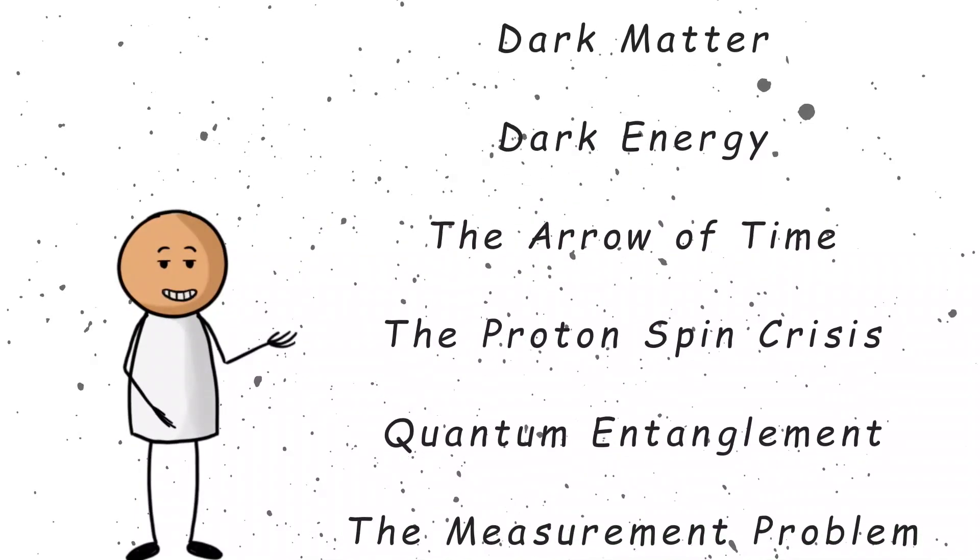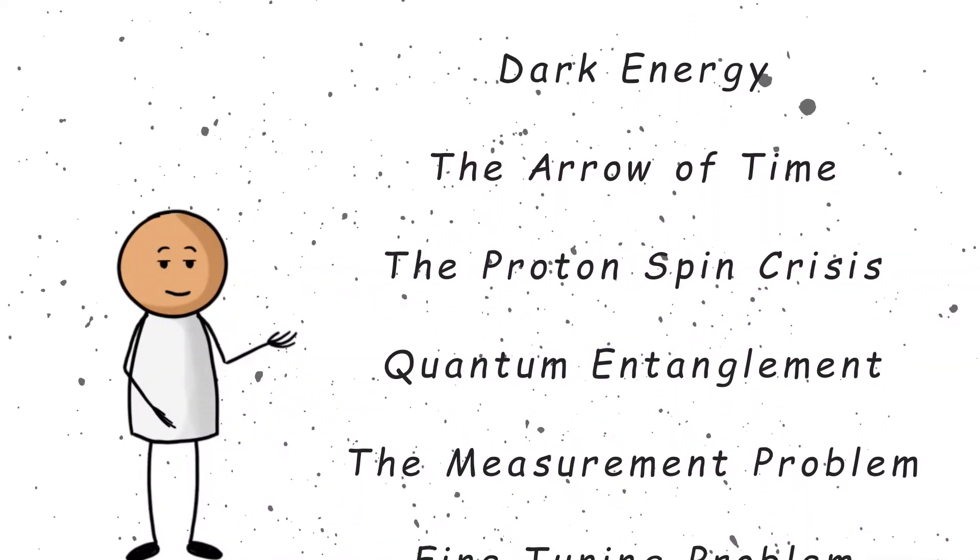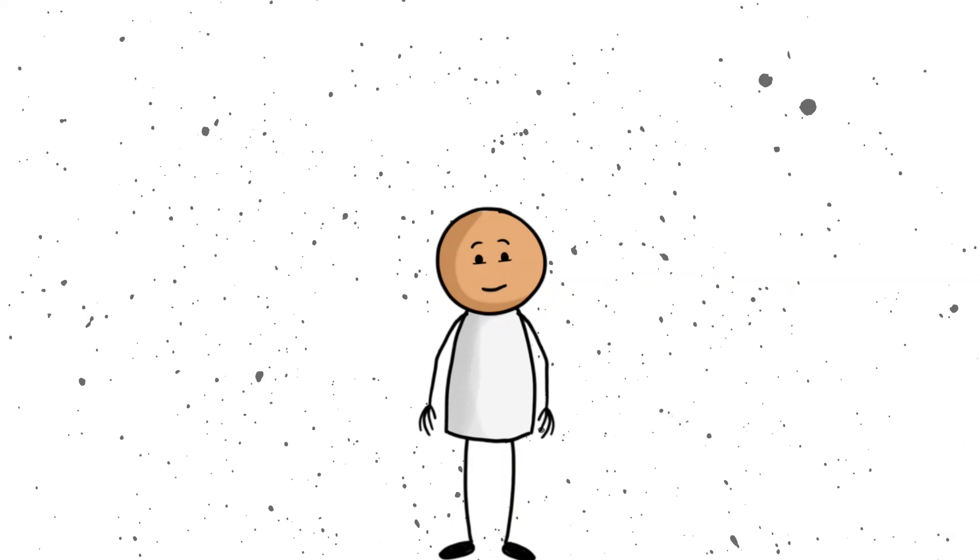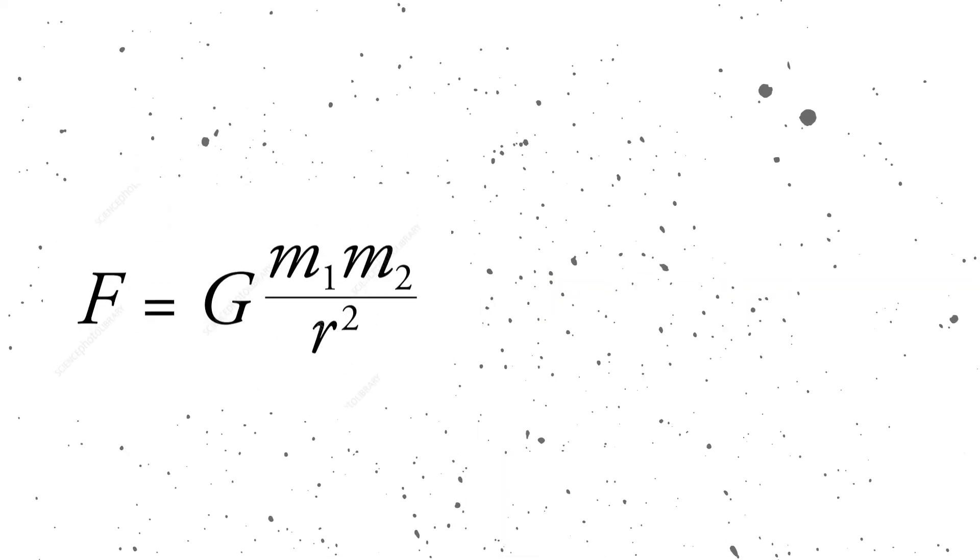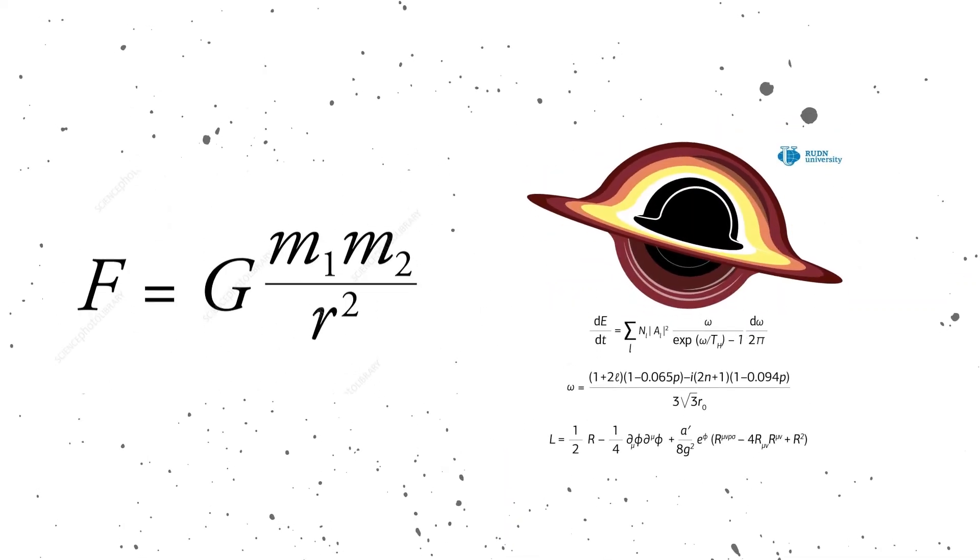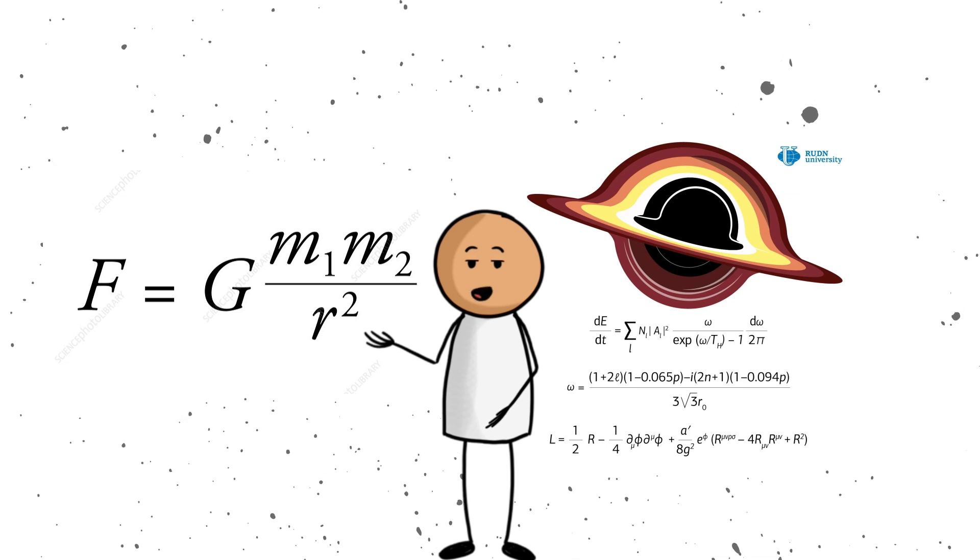7 Physics Phenomena That Still Confuse Scientists. Now, you might think physics has everything figured out. I mean, we've got equations for gravity, black holes, and even why toast always lands butter side down.